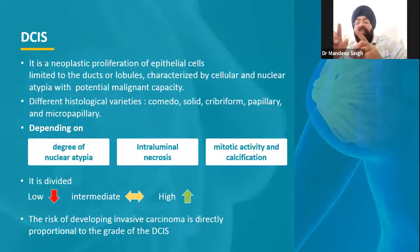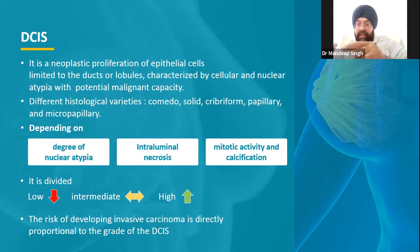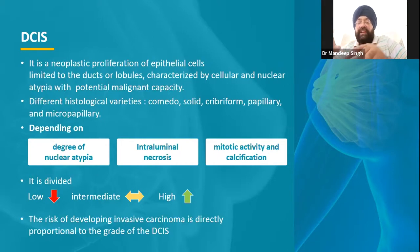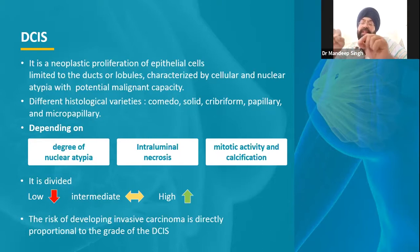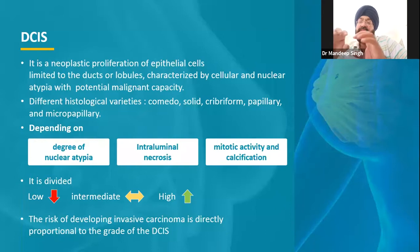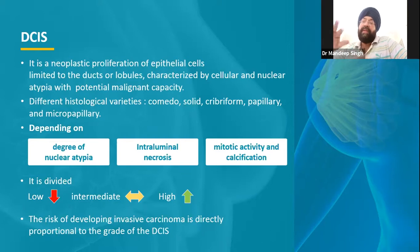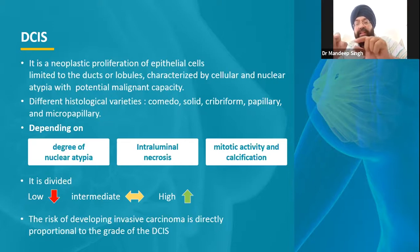Coming to the first variety: ductal carcinoma in situ means the neoplastic cell process starts from the ducts and has not breached the stroma. When we describe ductal carcinoma in situ, we describe various histological pictures. There may be a comedo pattern — with cells all around and areas of dead tissue in between. There is also the cribriform form, where cells are loosely packed. Then there is papillary formation. We also categorize by how aggressive the cancer cell appears — that is the nuclear grade.